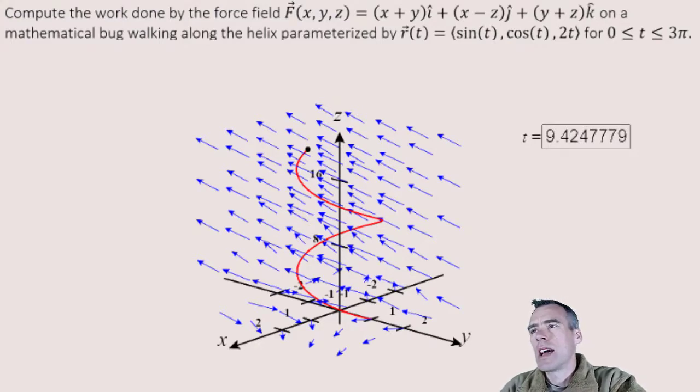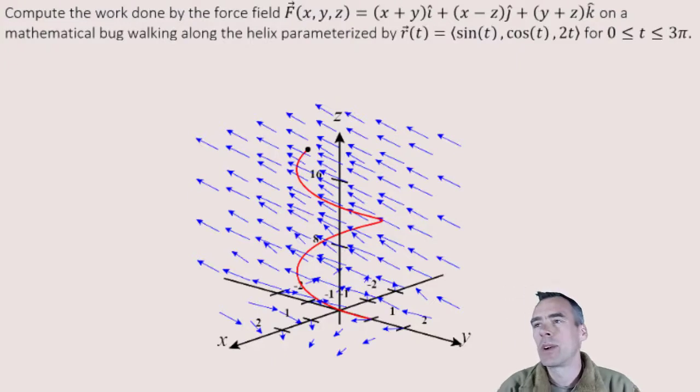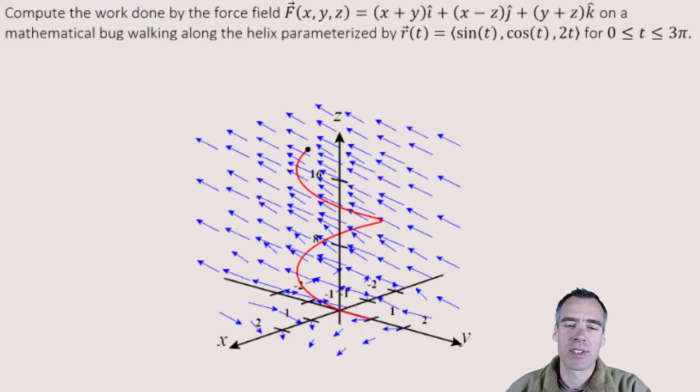So this is what we're looking at, and we're trying to find the work done on this bug as it travels that path by that force field shown in blue. So pretty complicated problem, but it turns out it's actually pretty easy, surprisingly. So let's go ahead and give this a shot.